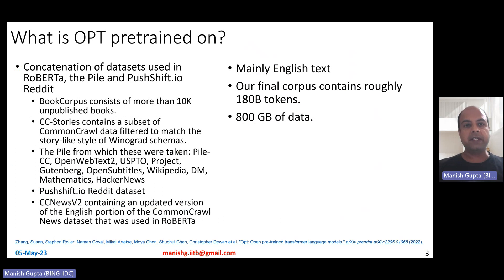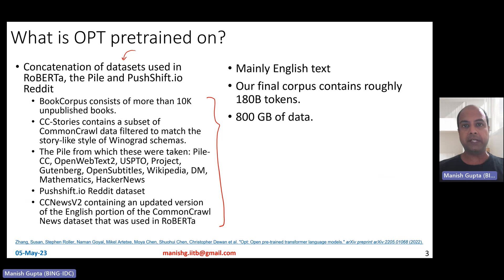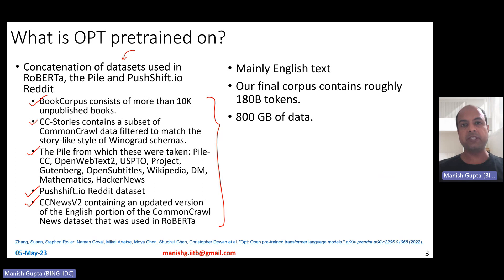OPT is pre-trained on a large corpus, which is a concatenation of datasets used in RoBERTa, the Pile, and Pushshift.io Reddit benchmark datasets. It contains Books Corpus with more than 10K unpublished books, CC Stories (a common crawl subset filtered to match the story-like style of Winograd schemas), the Pile corpus and several subsets like Pile CC, OpenWebText2, USPTO patents, Project Gutenberg, OpenSubtitles, Wikipedia, the Pushshift.io Reddit dataset, and CCNews v2 — a revised version of the common crawl dataset used in RoBERTa.